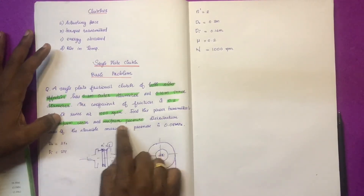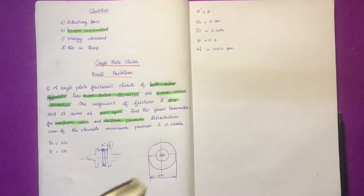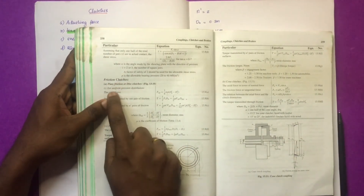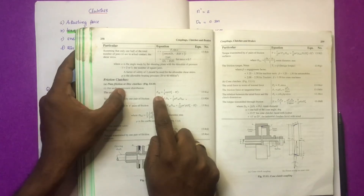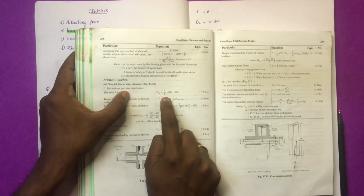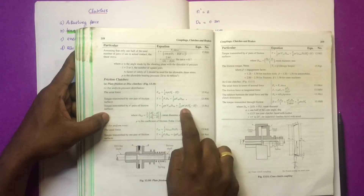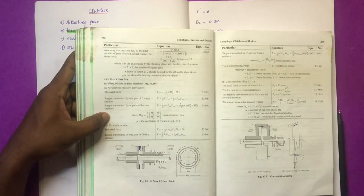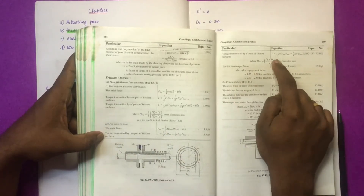We can use both uniform pressure and uniform wear assumptions to find the torque. From the data book, for plate and disc clutches, under uniform pressure distribution the axial force F_AP is given by an equation. The torque equation involves n' pairs of frictional surfaces. For uniform wear, the axial force F_AW and torque T follow separate equations.